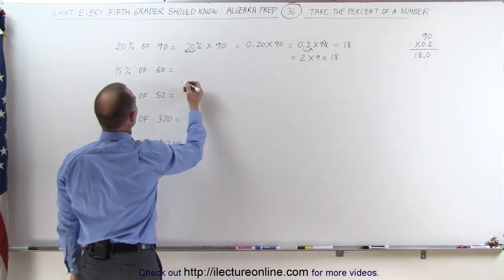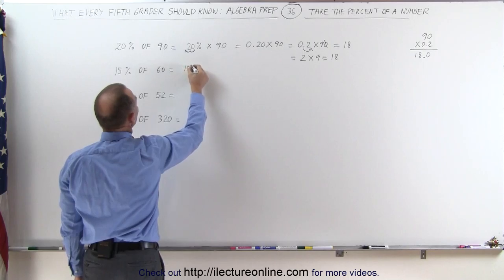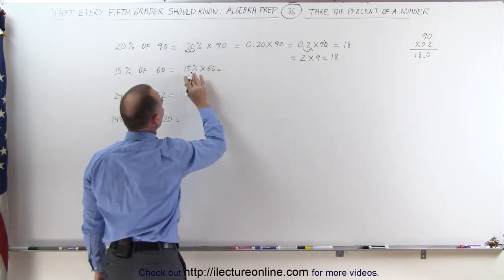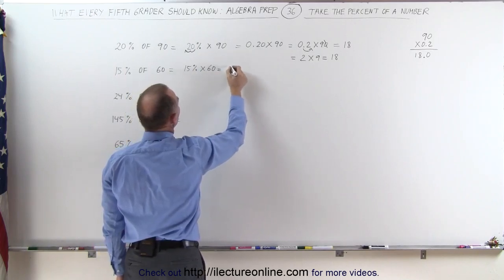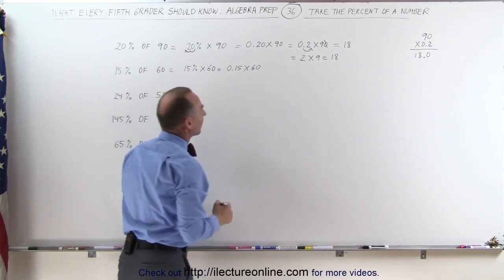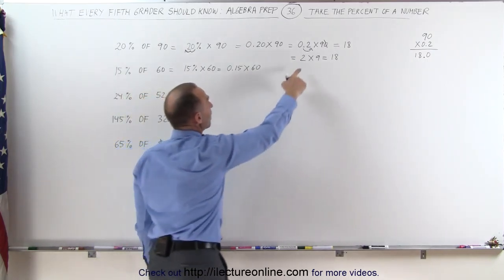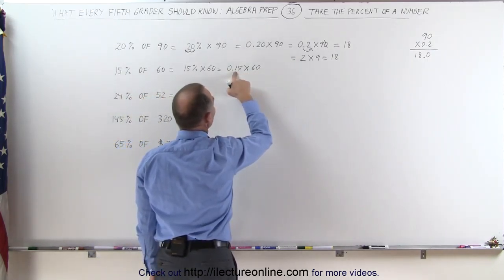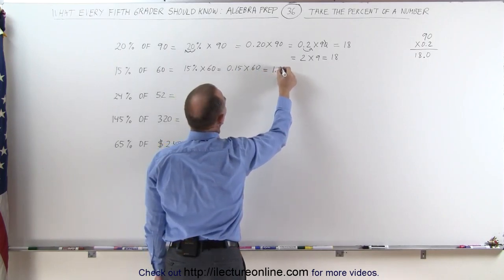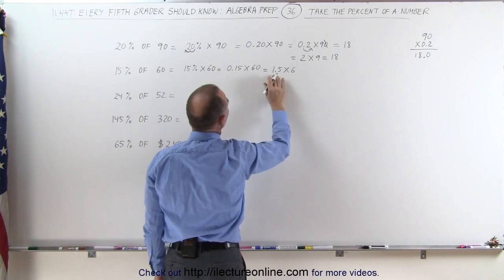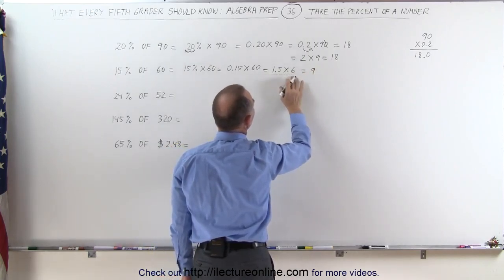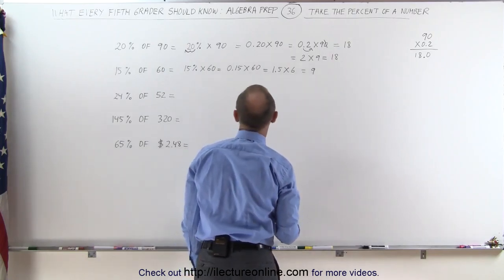Next example: 15% of 60 is the same as 15% times 60, which when converted to a decimal is 0.15 times 60. Using the same trick, if I multiply this times 10 and divide this by 10, this can be written as 1.5 times 6. And 1.5 times 6 is 9: 1 times 6 is 6, and 0.5 times 6 is 3. Therefore, this is 9.